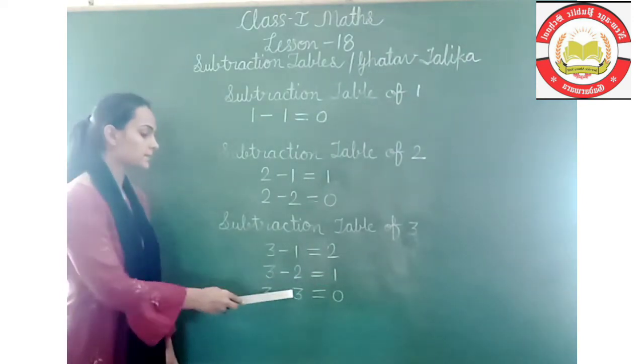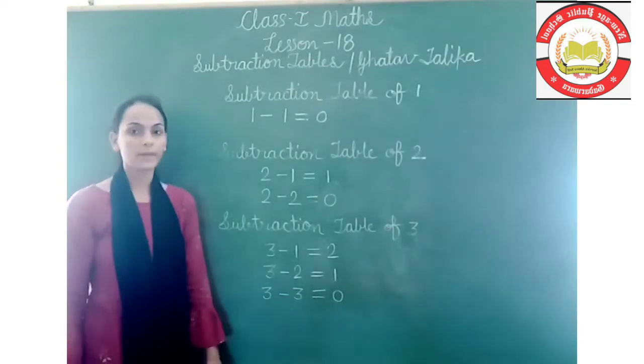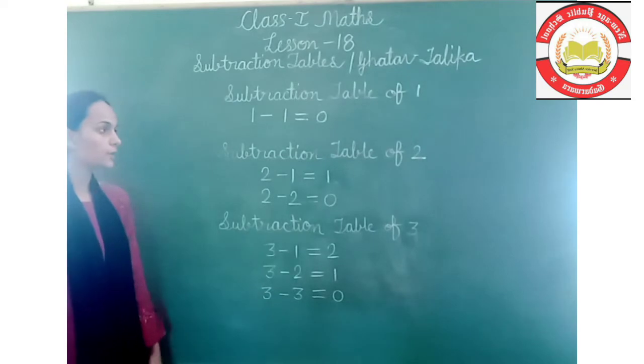And 3 minus 3 is equal to 0. So our subtraction table of 3 is complete. Okay students.